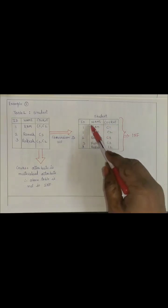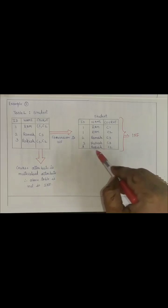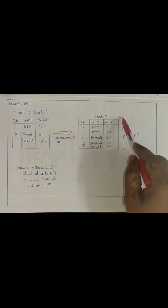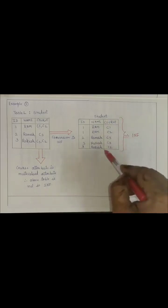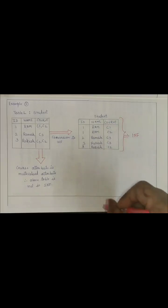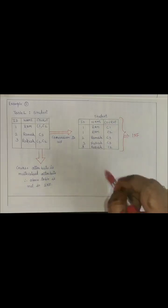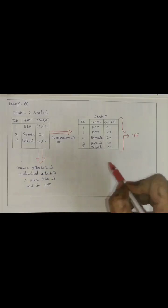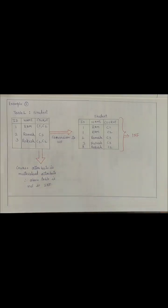All the other attributes are also single-valued attributes. So here we say this table is now in 1NF. I hope now it is clear to you all what is the concept of 1NF. Thank you.